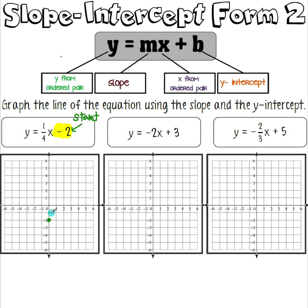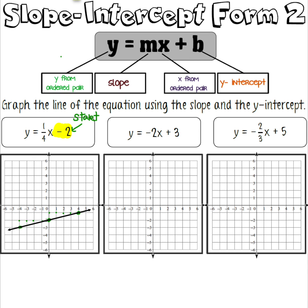With a slope of one fourth, we go up one over four and make a point. Remember, our rule for graphing is we need three points on the line, and right now we only have two. If you can't continue going up and over, just reverse and go down one over four the other way to make another point. Use a ruler to make your line, make sure it goes through your points, and put arrows at both ends — extending the line past those points.